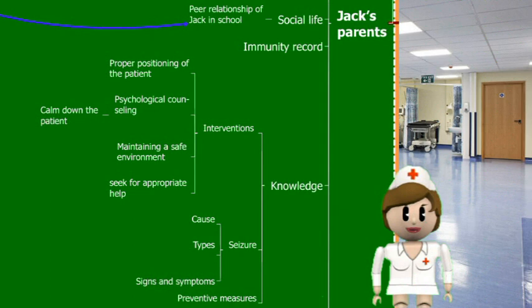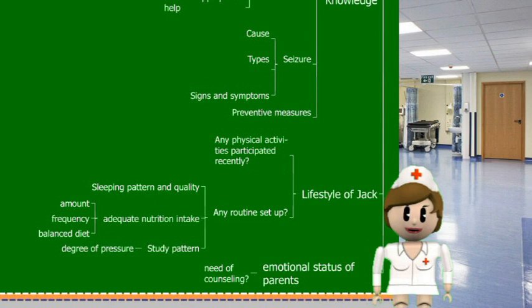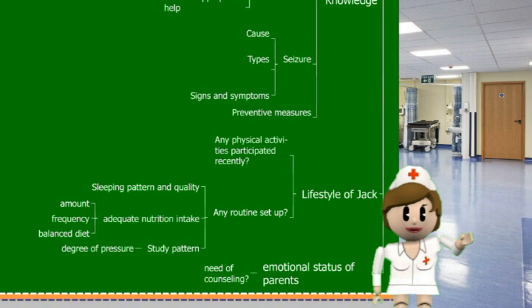We should assess Jack's lifestyle, obtaining information from parents about activities beyond table tennis, daily routine, and sleeping patterns, since lack of sleep can induce seizures. We should assess if he has a balanced diet, as malnutrition is also a cause of seizure. We should assess his degree of pressure by examining his study pattern, as stress is also a cause. Finally, we should assess the parents' emotional status to see if they are worried or scared, to consider the need for counseling.